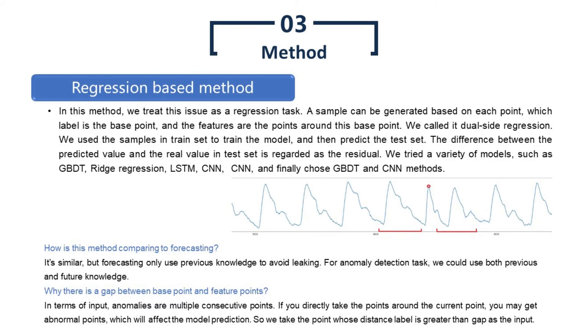In this type of method, we treat this issue as a regression task. Samples are regenerated to fit the regression schema. A sample can be generated based on each point, which label is the base point, and the features are the points around this base point. Here shows an example of how the sample is generated. The red hollow circle is the label point, and data points from red lines on both left and right sides are concatenated as features. We called it dual side regression. We used the samples in the train set to train the model, and then predict the test set. The difference between the predicted value and the real value in the test set is regarded as the residual.